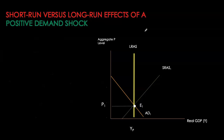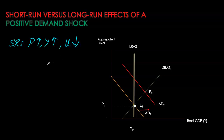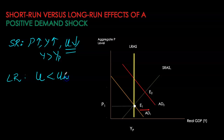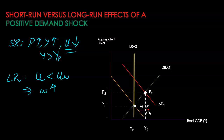Let's do the same now for a positive demand shock. The economy is initially at its long-run equilibrium, but there is a positive demand shock. This causes our price level to go up, GDP to go up, and unemployment to fall. Now output is above its potential, so we have an inflationary output gap and unemployment is much below its natural rate. Now in the long run, when unemployment is below the natural rate, it's going to push our wages up because we have labor shortages in our labor market.